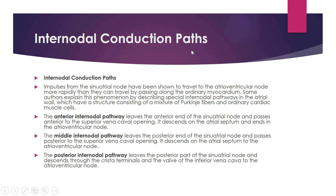There are three types of internodal conduction pathways from the SA node to the AV node. Impulses from the SA node travel to the AV node more rapidly than through ordinary myocardium. Some authors describe special internodal pathways in the atrial wall consisting of a mixture of Purkinje fibers and ordinary cardiac muscle cells. These are: the anterior internodal pathway, leaving the anterior end of the SA node and passing anterior to the superior vena cava, then descending on the atrial septum to the AV node.